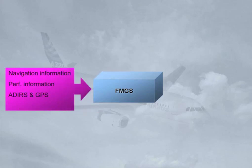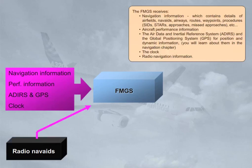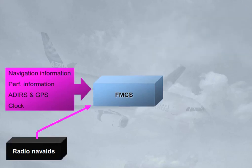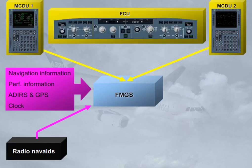The FMGS receives the Global Positioning System for position and dynamic information. You will learn about them in the navigation chapter. The clock and radio navigation information are also inputs. The pilots provide inputs to the FMGS using two Multipurpose Control and Display Units, MCDU, for long-term interventions, and a single Flight Control Unit, FCU, for short-term interventions.